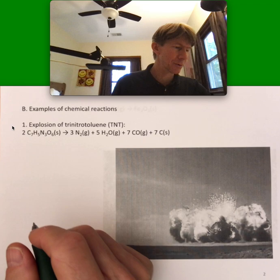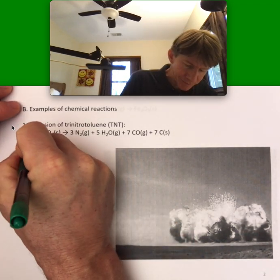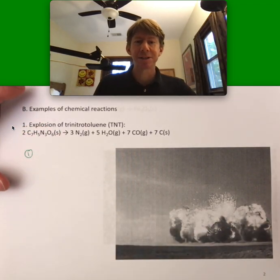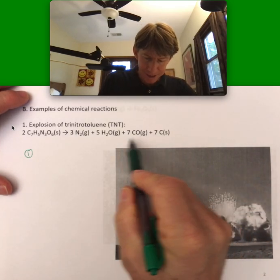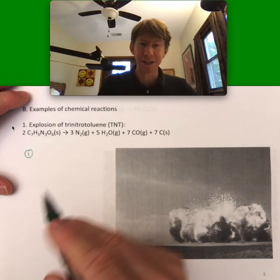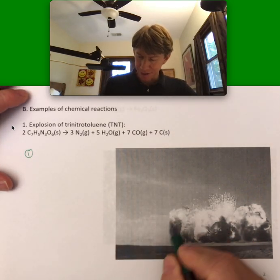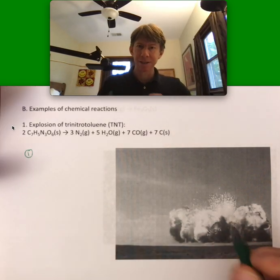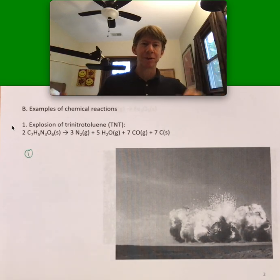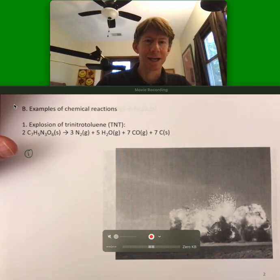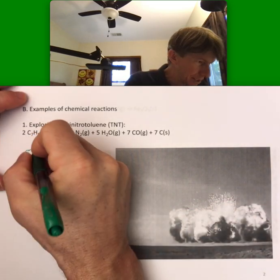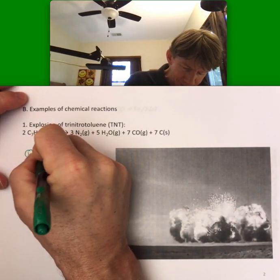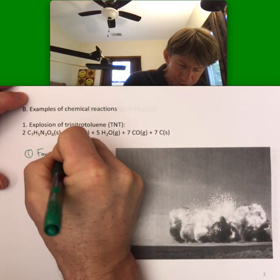The first thing we're going to notice as evidence of chemical reaction is that there is a gas produced. You can see the gases — two gases, actually three gases right here. You can see the evidence of those gases by the explosion and everything moving outward. So, formation of gas is evidence of a chemical reaction.